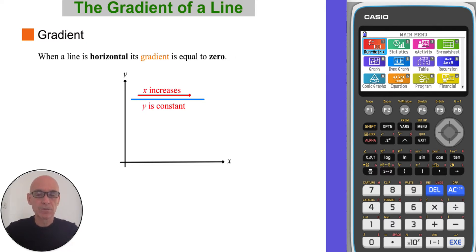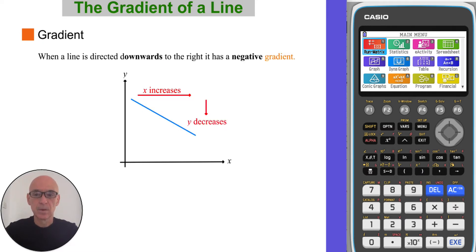When a line is horizontal, its gradient is equal to zero. As x increases, y is constant. When a line is directed downwards to the right, it has a negative gradient. As x increases, y decreases.